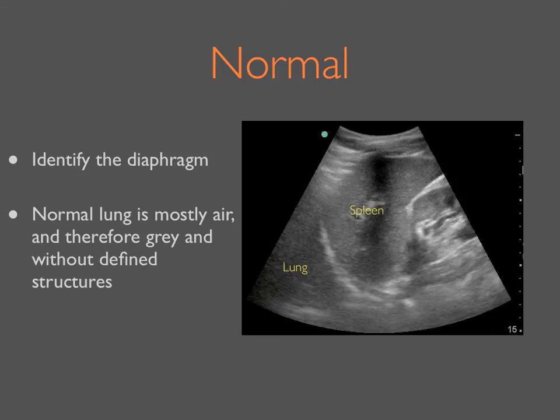The image you will see is the coronal plane image through the base of the hemithorax. Identify the curved hyperechoic line of the diaphragm as your landmark. On the abdominal side of the diaphragm, you will see the spleen or liver with their characteristic appearance. And on the thoracic side of the diaphragm, if normal, you will see a gray, foggy appearance of normal lung.